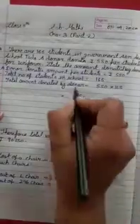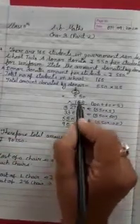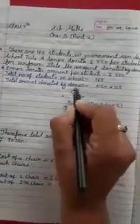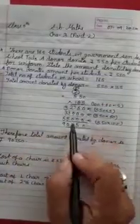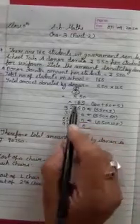5 zeros are 0. 5 fives are 25, write 5 carry 2. 5 fives are 25, 25 into 27. Now, 0. 6 zeros are 0. 6 fives are 30, write 0 and 3 carry. 6 fives are 30, 30 and 3, 33. Now, 1 0. 1 multiply 0 is 0. 5 ones are 5. 5 ones are 5. 1 fives are 5. 1 fives are 5.